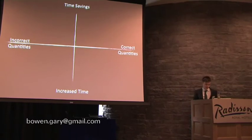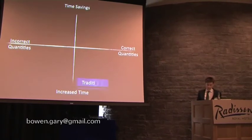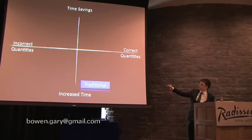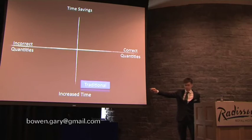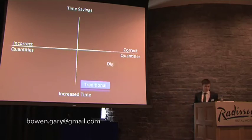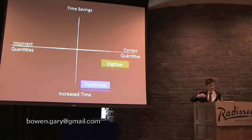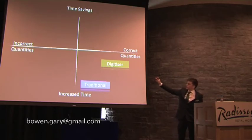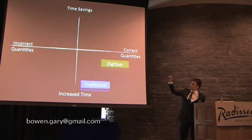Currently the traditional process — measuring with a ruler and pencil — is on the side of correct quantities but down here at increased time, so we don't have significant time savings that way. The next process is the digitiser method: just clicking corners on screen to get areas. We reduce errors slightly and get better quantities, but the digitiser method doesn't get us over the line.